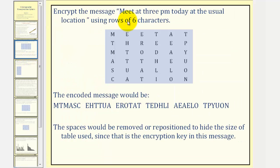As an example, let's encrypt the message meet at 3 p.m. today at the usual location using rows of six characters. So if each row has six characters, that means we should form a table with six columns. One, two, three, four, five, six. Notice how each row will have six characters.